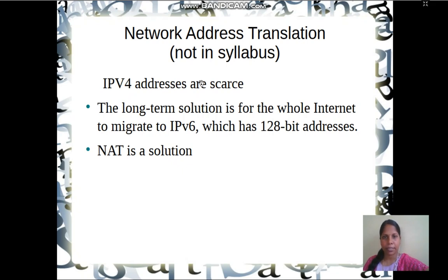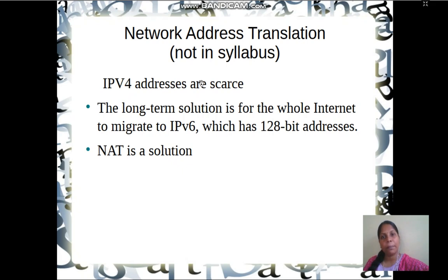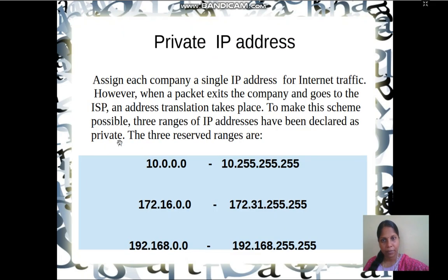IP version 4 addresses are 32 bits long. If you assign a unique IP address to all machines around the globe, this IPv4 address space will expire one day. One solution is to use a 128-bit long IP version 6 address, but switching from IPv4 to IPv6 takes much time. So another solution is Network Address Translation.